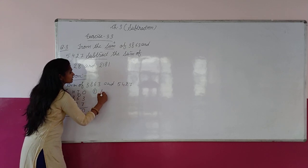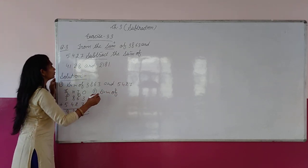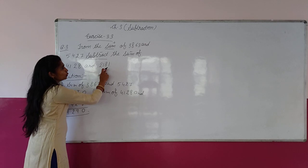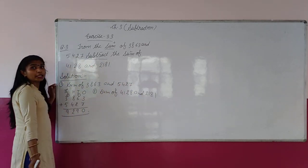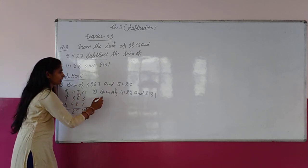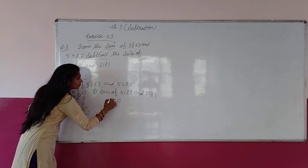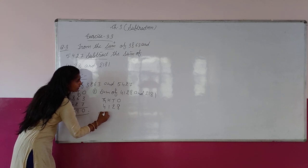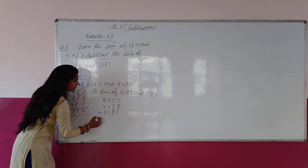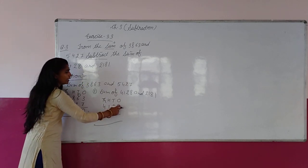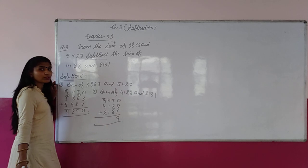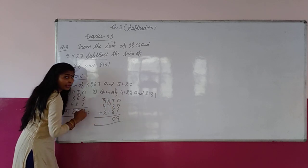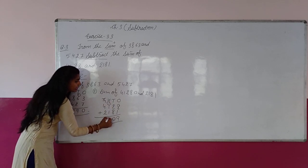Second work: sum of 4,128 and 2,181. इन दोनों का भी sum निकालेंगे. 1s, 10s, 100, 1000 columns में: 4,128 plus 2,181. 8 plus 1 = 9. 2 plus 8 = 10, 0 लिखेंगे, 1 carry जाएगा. 1 plus 1 = 2, and 1 carry = 3. 4 plus 2 = 6.